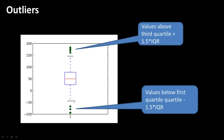Outliers are calculated using a rule of thumb: anything that lies over 1.5 times the IQR above the 75th percentile or below the 25th percentile. So values above the third quartile plus 1.5×IQR are outliers, and values below the 25th percentile minus 1.5×IQR are outliers. That's how outliers are defined and displayed in a box plot.